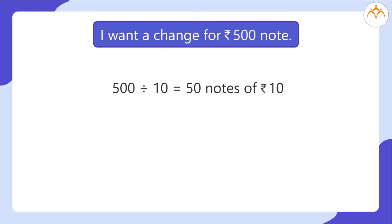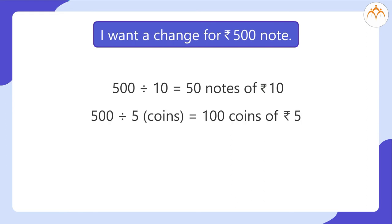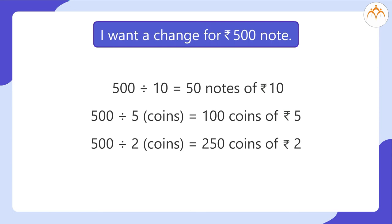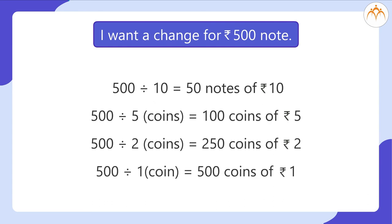500 divided by 10 is equal to 50 notes of rupees 10. 500 divided by 5 is equal to 100 coins of rupees 5. 500 divided by 2 is equal to 250 coins of rupees 2. And 500 divided by 1 is equal to 500 coins of rupees 1.